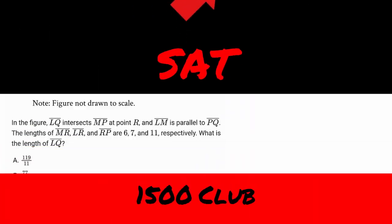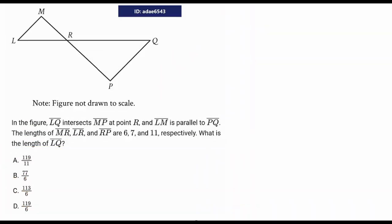This one's yet another hard SAT geometry problem that's really a proportion problem in disguise. In the figure, LQ intersects MP at point R, and LM is parallel to PQ. The lengths of MR, LR, and RP are 6, 7, and 11 respectively. What's the length of LQ?